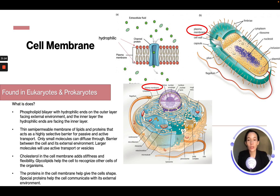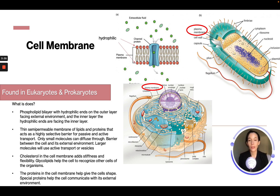Only small molecules can diffuse through the membrane. Larger molecules need to use active transport or vesicles — we can see a channel protein that allows bigger molecules through. Cholesterol in the cell membrane adds stiffness and flexibility, and glycolipids help the cell recognize other cells of the organism. Proteins in the cell membrane help give the cell shape, and special proteins help the cell communicate with its external environment.